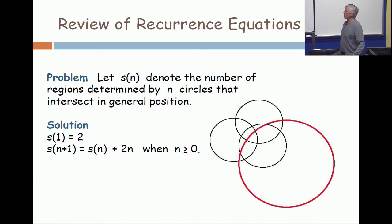s(n) is the number of regions determined by n circles that intersect in general position. This is very similar to the preceding one, except the n plus 1 in the first one has become 2n in this one.